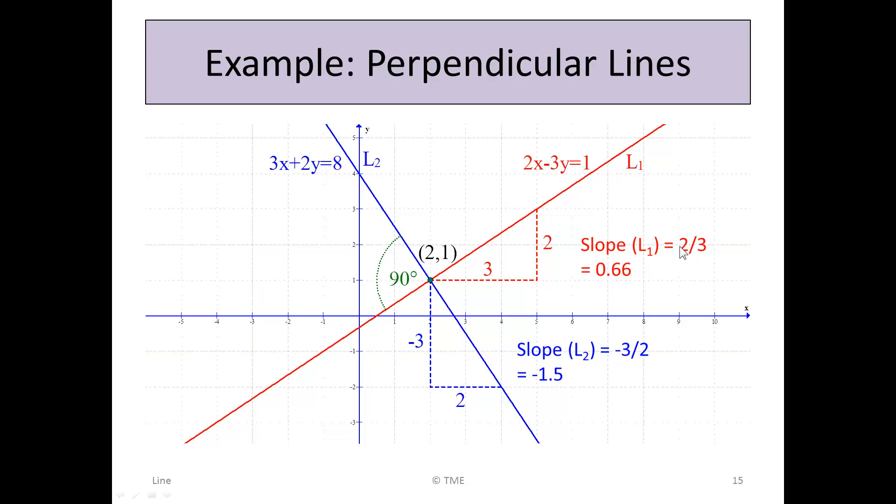The slope of L₁ is 2/3 or 0.666. The slope of L₂ is -3/2 or -1.5. Those two multiplied give -1, and this is a 90-degree angle, showing the lines are perpendicular.